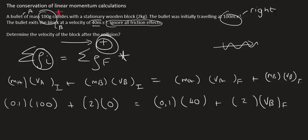But now it just becomes a simple equation where this on the left just becomes 10 plus 0 equals to 4 plus 2 times velocity of block. And so if you move the 4 over, we end up with 6 equals to 2 times velocity of block. And then you just divide by 2.